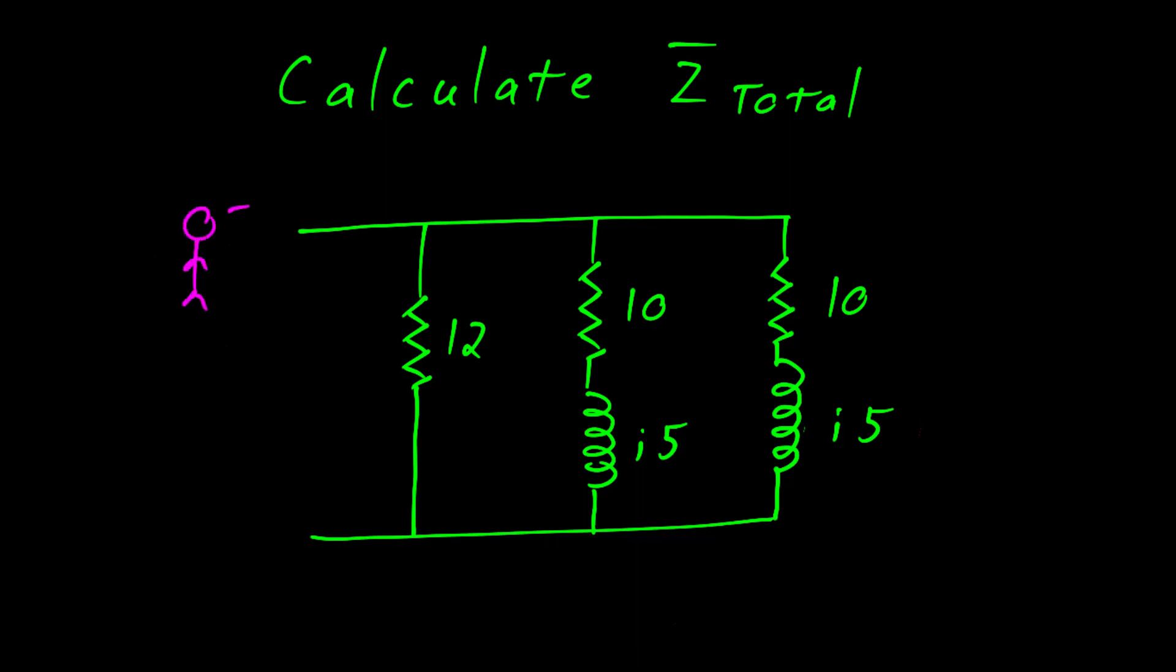In this problem, we are asked to solve for the total impedance. This problem is a series parallel circuit with three components. We have a heater and two identical motors.